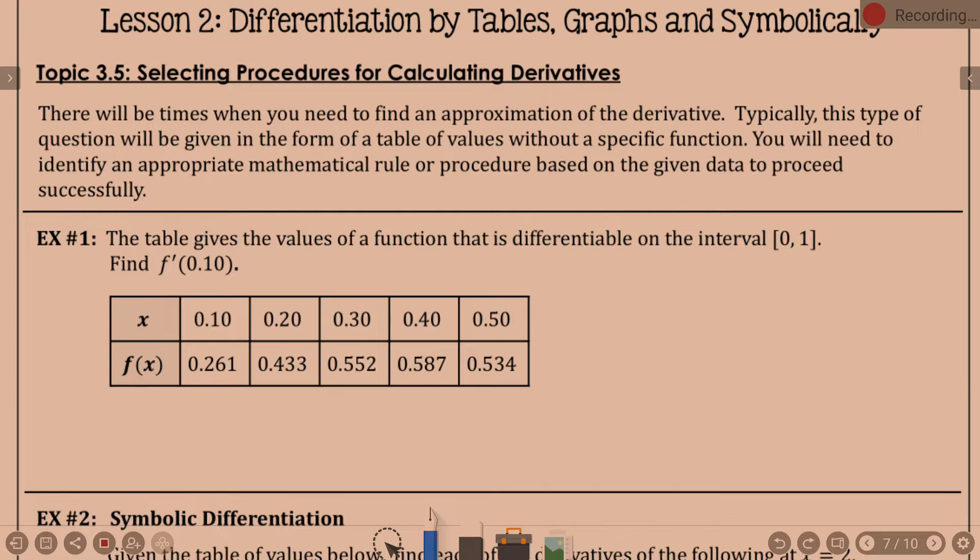There will be times when you need to find an approximation of the derivative. Typically, this type of question will be given in the form of a table of values without a specific function. You'll need to identify an appropriate mathematical rule or procedure based on the given data to proceed. The table gives the values of a function that is differentiable on the interval from 0 to 1. Find f prime of 1 tenth.